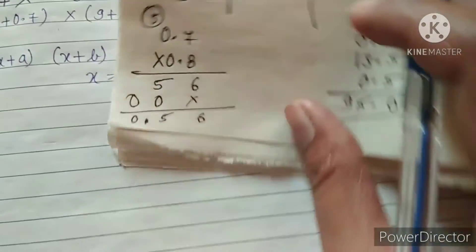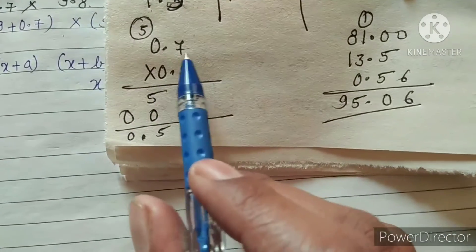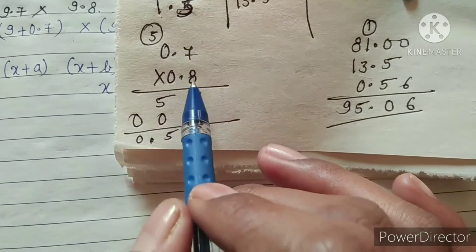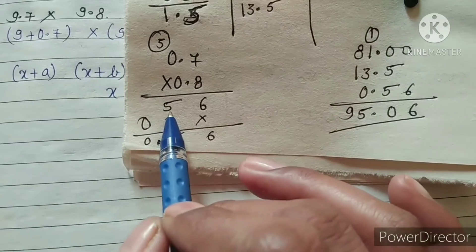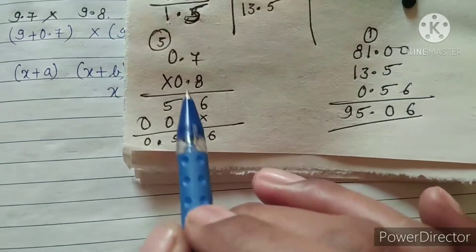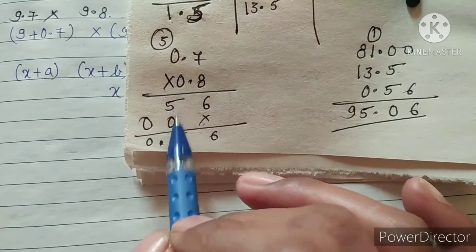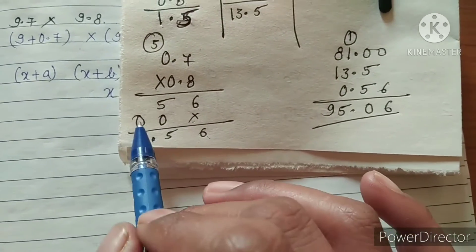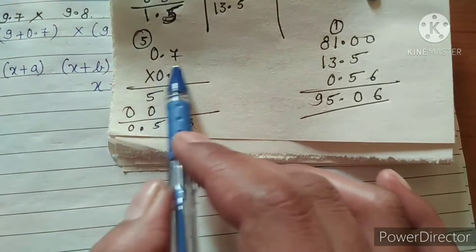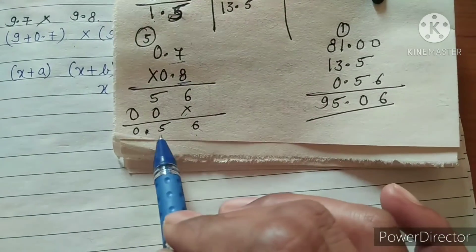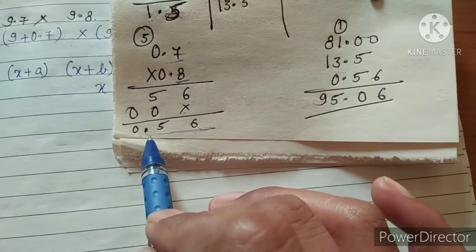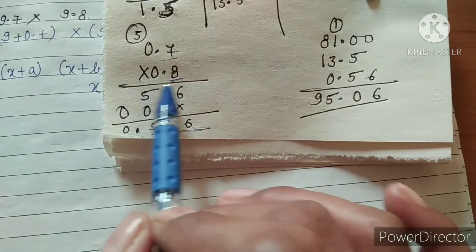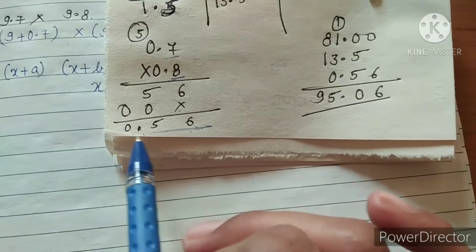For 0.7 multiplied by 0.8: 8 sevens are 56, write 6 carry 5; 8 zeros is 0, plus 5 is 5. On ones place: 0 times 7 is 0, 0 times 0 is 0; 6 and 5 as they are. After decimal 1 value plus 1 value means 2 decimal places, so 0.7 times 0.8 equals 0.56.